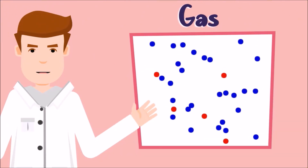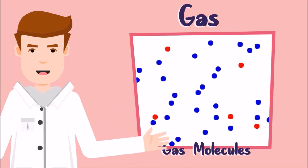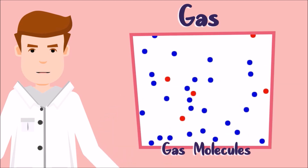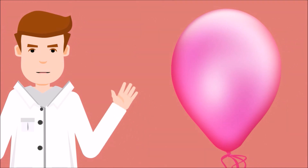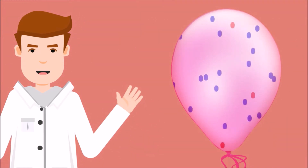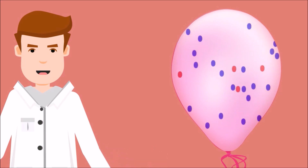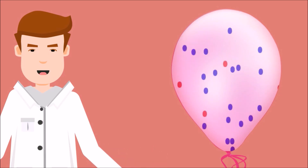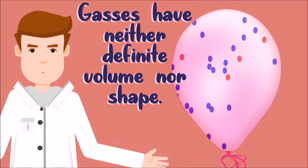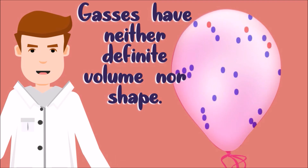Molecules of gases are far from each other. They constantly move in all directions and fill the shape of the container. The force between the molecules of gas is weak. This explains that gases have neither definite volume nor shape.